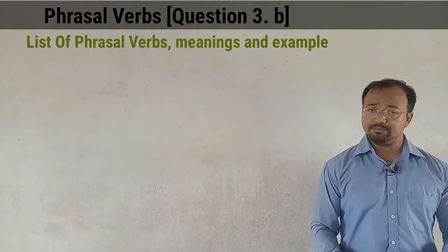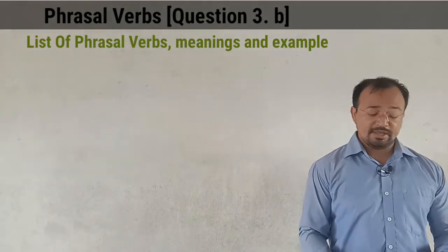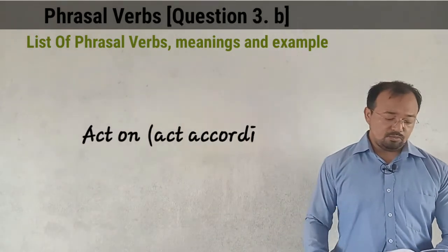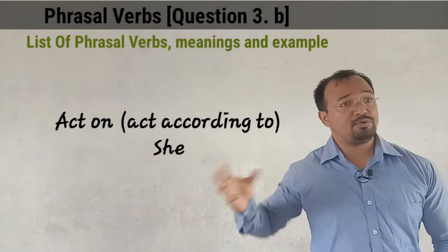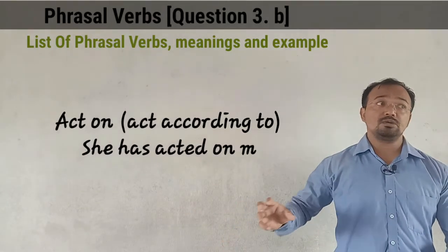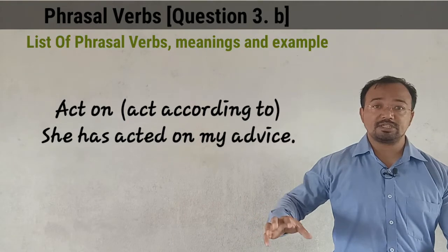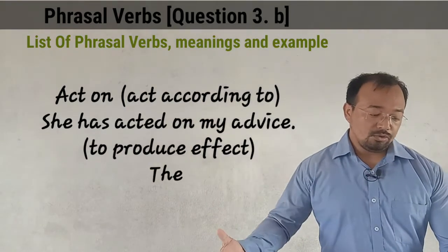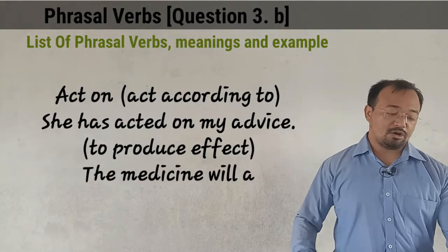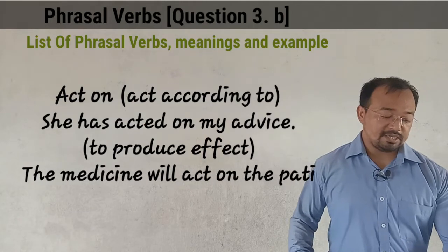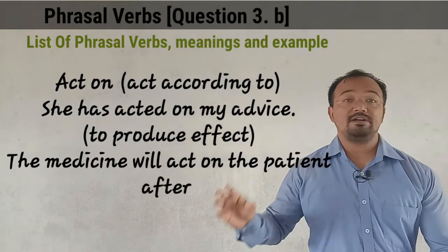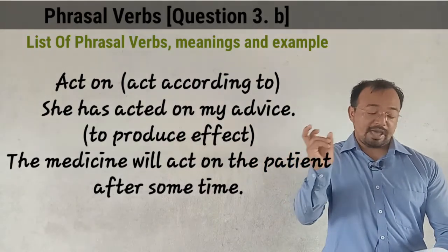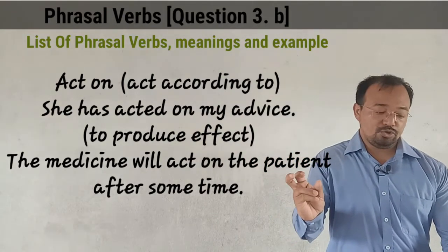The first word starting with A is 'act'. The preposition used here is 'on', making the phrasal verb 'act on'. Act on means to act according to, or to produce an effect. For example: 'She has acted on my advice.' The verb comes first, then the preposition — this is a phrasal verb.